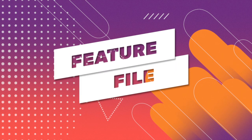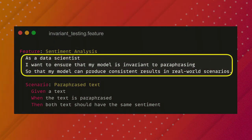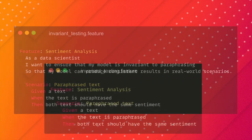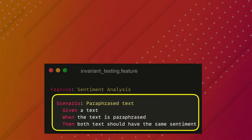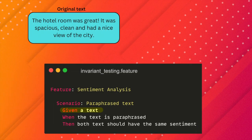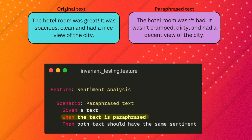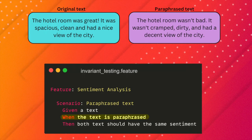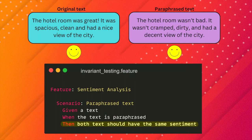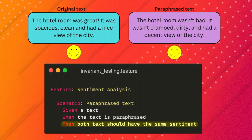The feature file describes a feature of a machine learning model. The description for the feature is optional but could be useful to define the goals of the test. The scenario includes three steps: given, when, and then. The given step establishes the initial state of the scenario, which is a text. The when step describes the action to be taken, which is to paraphrase the text. The then step describes the expected outcome — that both the original text and the paraphrased text should have the same sentiment.